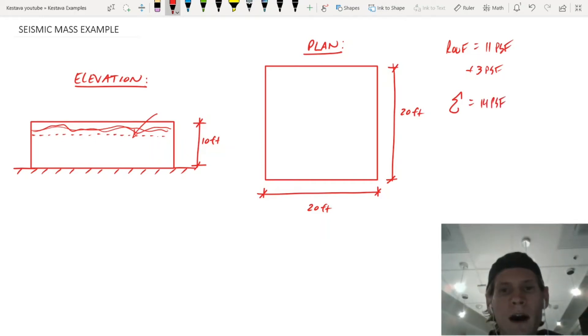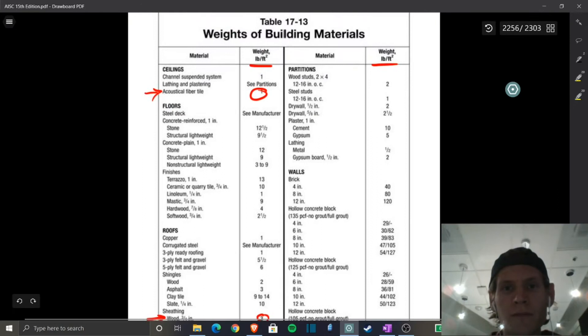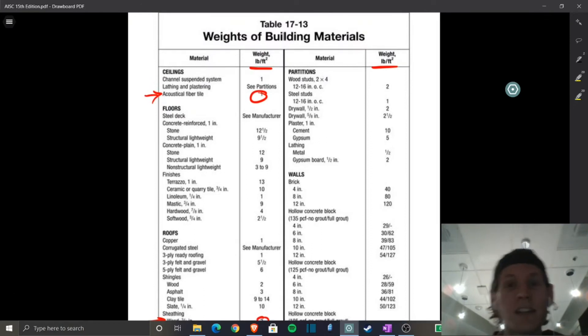So we're going to add three PSF to give us a grand total of 14 PSF. The slab, we said we're not including. So now we just need walls. So walls, we have wood studs, we're going to say two by four, that's going to be adequate for this building, 12 to 16 inches on center. So we're going to use two PSF for that. And then we're going to have drywall on it, it's going to be finished, it's going to be commercial space. So let's say five eighths inch drywall. So that's going to put us at another two and a half PSF.